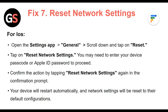Fix 7: Reset the network settings. For iOS, open the Settings app then General, scroll down and tap Reset, then tap Reset Network Settings. You may need to enter your device passcode or Apple ID password to proceed. Confirm the action by tapping Reset Network Settings again in the confirmation prompt. Your device will restart automatically and network settings will be reset to their default configurations.